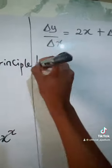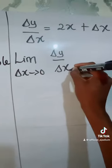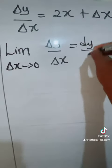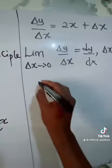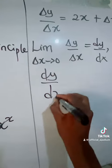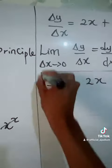Then the limit as change in x approaches 0 of change in y over change in x equals dy over dx. And as change in x equals 0, therefore dy over dx equals 2x. Thank you guys.